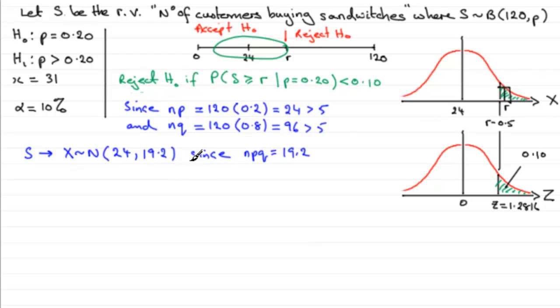Okay, well we know that any Z value is given by the observed value, which in this case is going to be R minus 0.5, minus the mean 24, divided by the standard deviation which is going to be the square root of 19.2. And this equals this Z value of 1.2816.